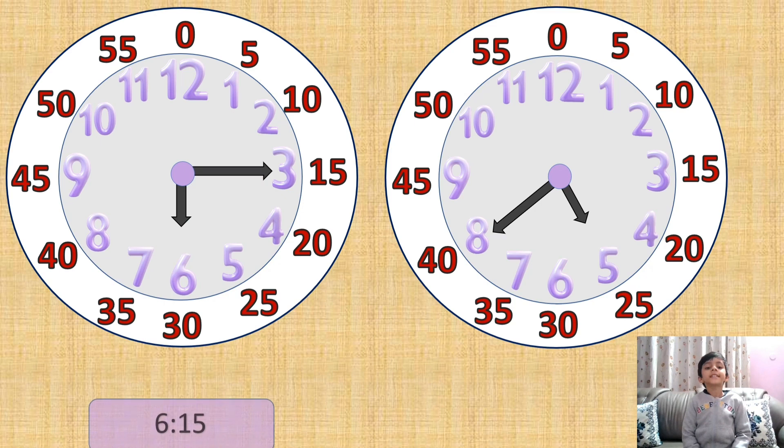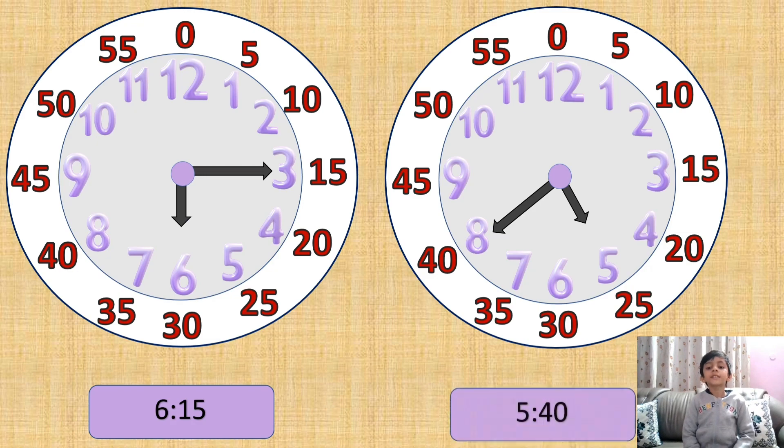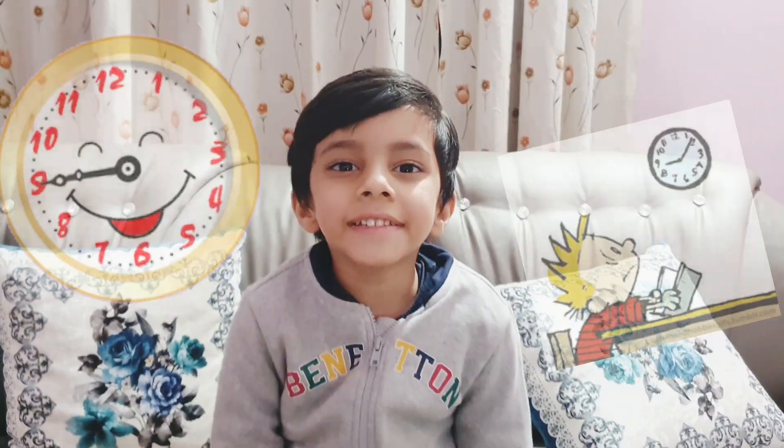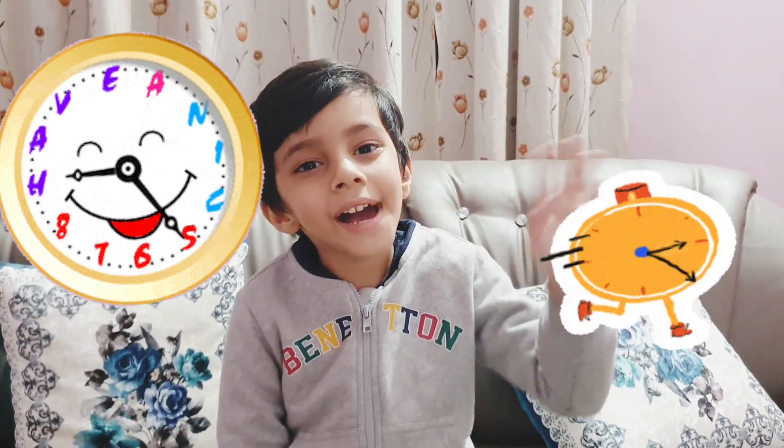In the second clock, the hour hand is pointing to 5 and the minute hand is pointing to 8, so 5:40 is the time. I hope you all have learned how to tell time. Bye-bye.